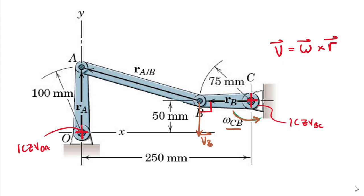Moving over to point A — at this point in the problem you may not know what direction point A is moving, left or right, but you do know it's going to occupy this line, because that line is perpendicular to my R vector coming from the fixed axis point O up to point A. So it's safe to just draw a dotted line and not put in that direction yet. Now let's find our ICZV of member AB — for body AB one velocity is vertical and one is horizontal, so they are not parallel, and we need to draw perpendicular lines from those velocities.